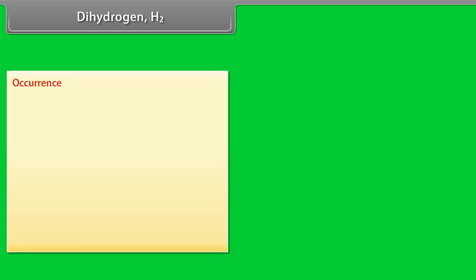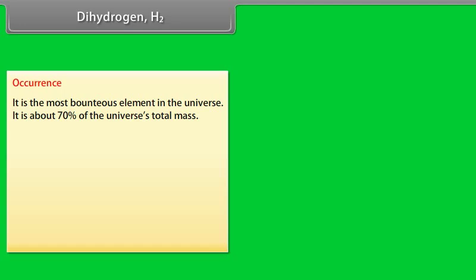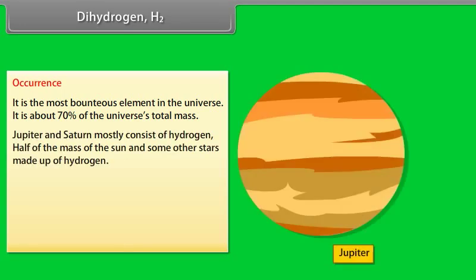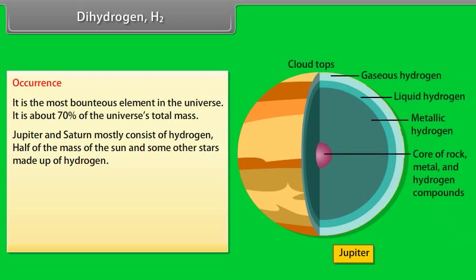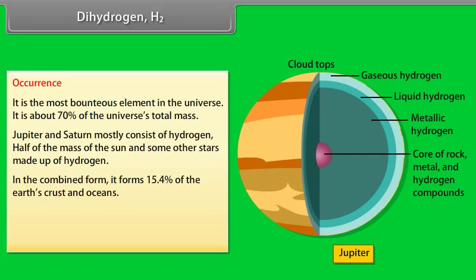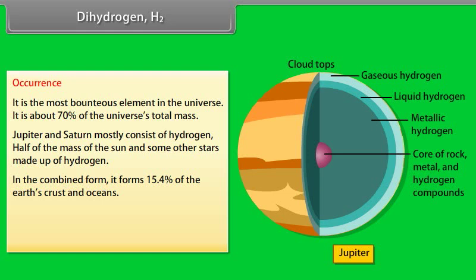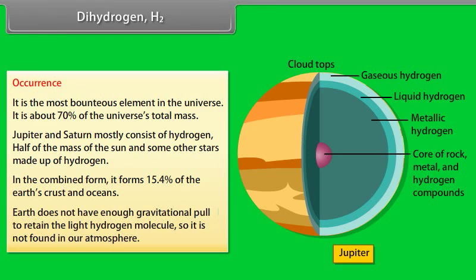Dihydrogen H2 Occurrence. Dihydrogen is the most bounteous element in the universe. It has about 70% of the universe's total mass. Jupiter and Saturn mostly consist of hydrogen. Half of the mass of the sun and some other stars made up of hydrogen. In the combined form, it forms 15.4% of the Earth's crust and oceans. Earth does not have enough gravitational pull to retain the light hydrogen molecule, so it is not found in our atmosphere.